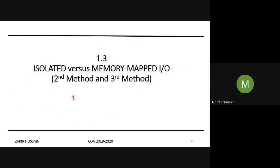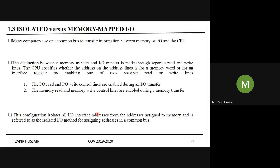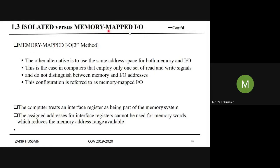The three methods are: use two separate buses, one for memory and one for I/O; use one common bus with separate control lines; and the third method — memory-mapped I/O — uses one common bus for memory and I/O with common control lines. Here the same address space is used for both memory and I/O.